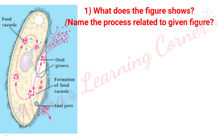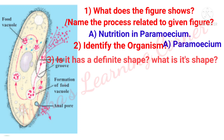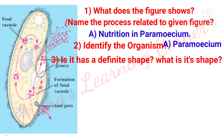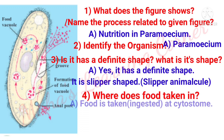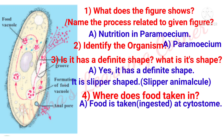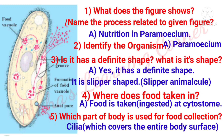What does the figure show? Answer: Nutrition in paramecium. Identify the organism. Answer: Paramecium. Does it have a definite shape? Answer: Yes, it has a definite shape — it is slipper-shaped. Where is food taken in? Answer: Food is ingested at the cytostome. Which part of the body is used for food collection? Answer: Cilia, which covers the entire surface of the body.